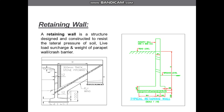The retaining wall is provided to retain the soil from spilling. If required means if there is no land available to provide the natural slope of the earth behind the wing walls, then we need to provide the retaining wall or the toe walls.